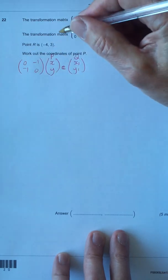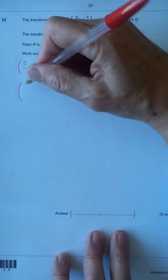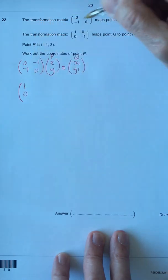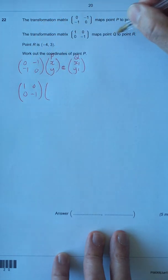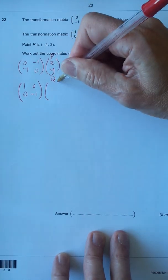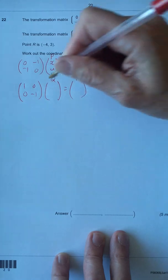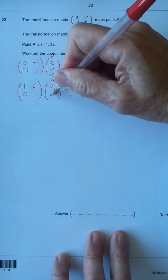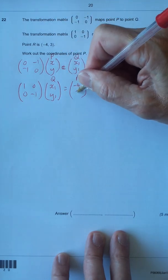Then we've got the second transformation matrix, which is 1 0, 0 minus 1, which maps Q onto R. And Q, we don't know, is going to be X1, Y1. And R, we do know, is minus 4, 3.